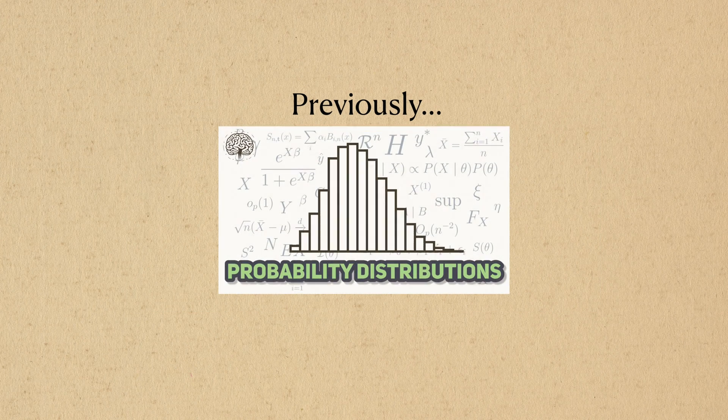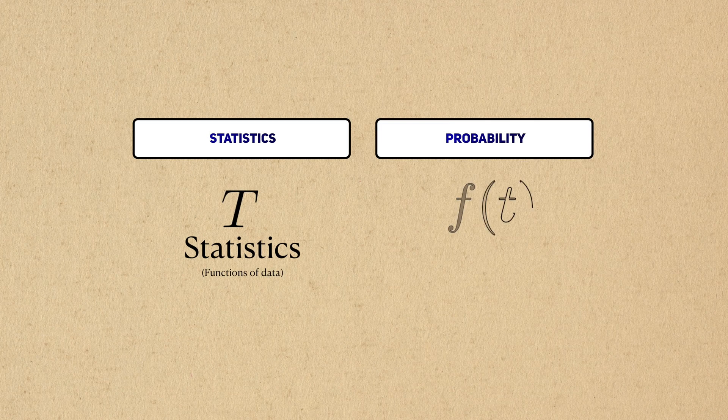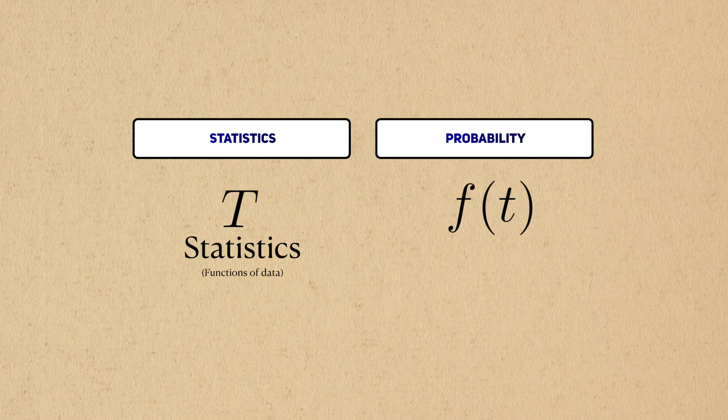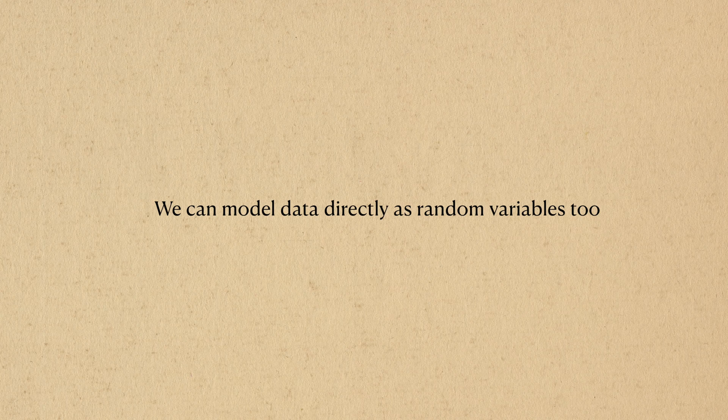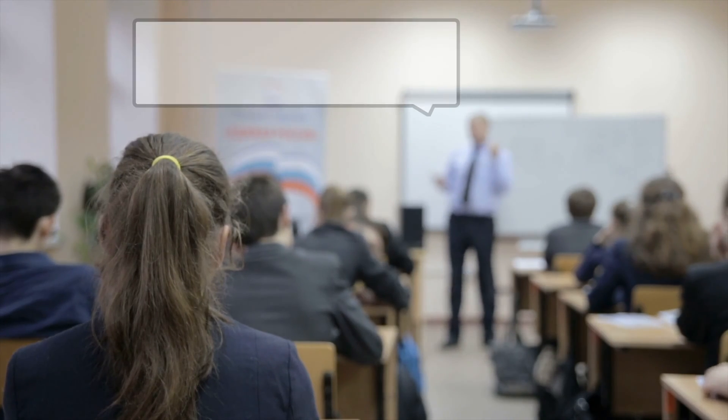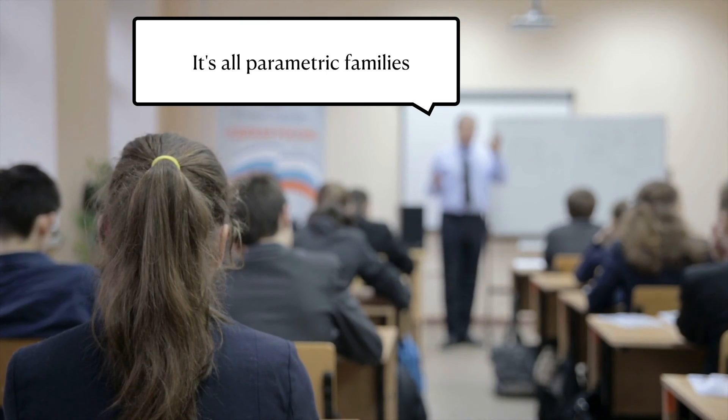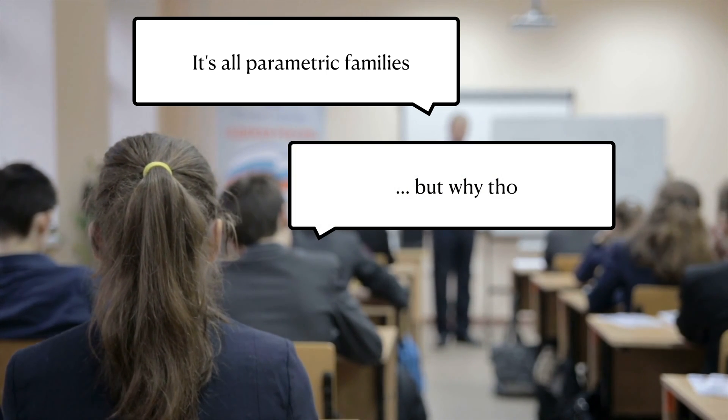I've previously mentioned that the unifying concept between statistics and probability is that statistics, functions of data, have probability distributions. While this is true, we can also model real-world phenomena directly as random variables. In many introductory statistics classes, students will jump straight to assuming that these are parametric families, without appreciating why we make that assumption in the first place.